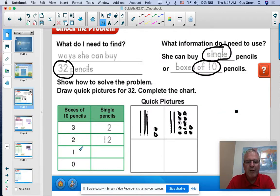A third way she could do it is one 10, and we're going to move this 10 into the ones. How many single pencils would she have to buy? Let's count it out.